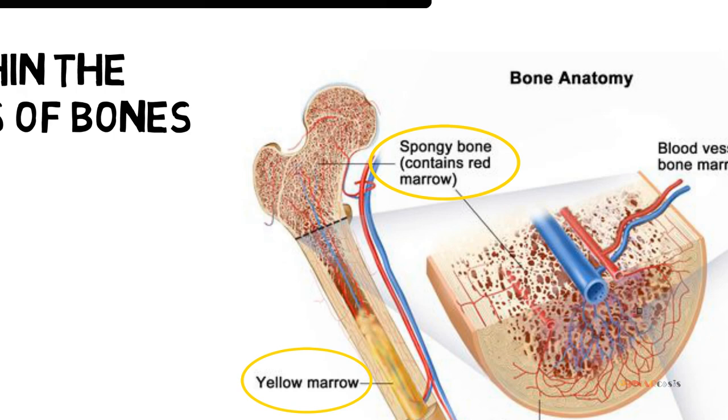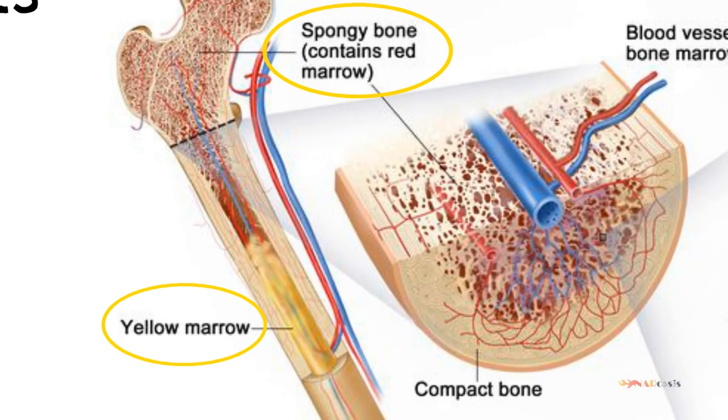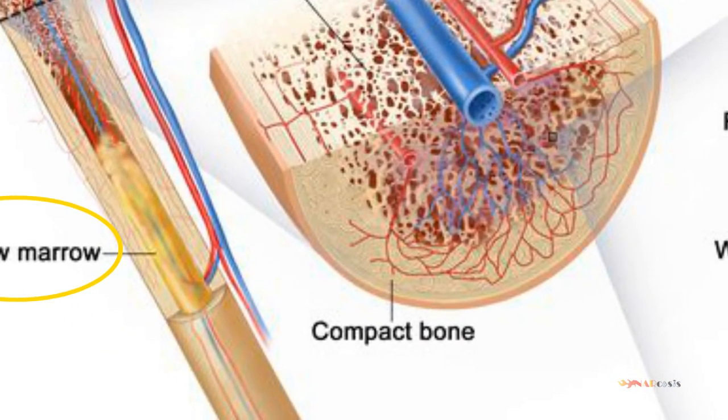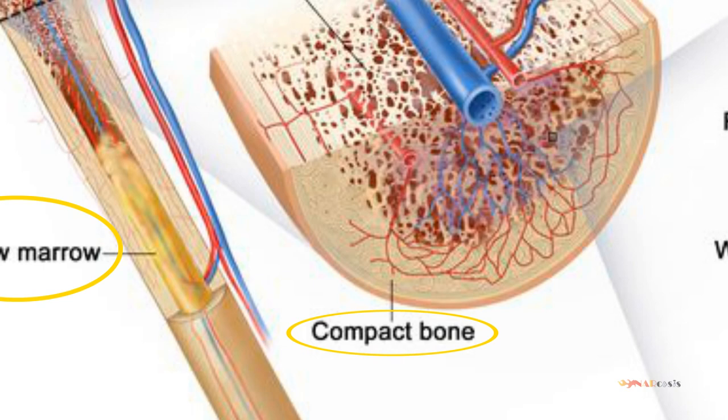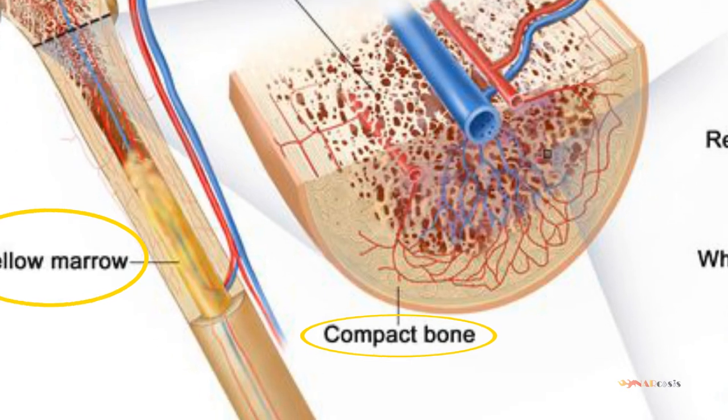These trabeculae are actually arranged along lines of stress, and this spongy bone is usually surrounded by a shell of compact bone which provides greater strength and rigidity.